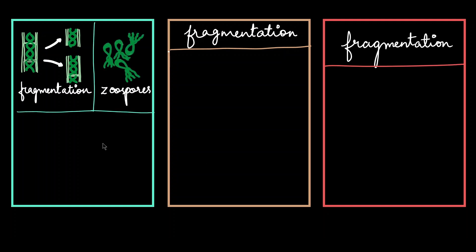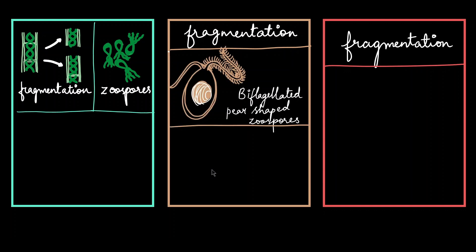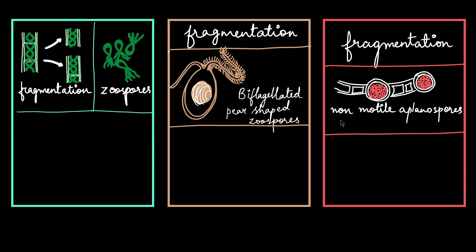Asexual spores like zoospores are also seen here. These are motile spores that can develop into individual algae. The zoospores of brown algae are pear-shaped with two flagella, so hence they are biflagellated. They are a little different in red algae because these are not motile spores and they are called as aplanospores. These aplanospores are found in the parent body and they burst out and then they develop into individual algae.